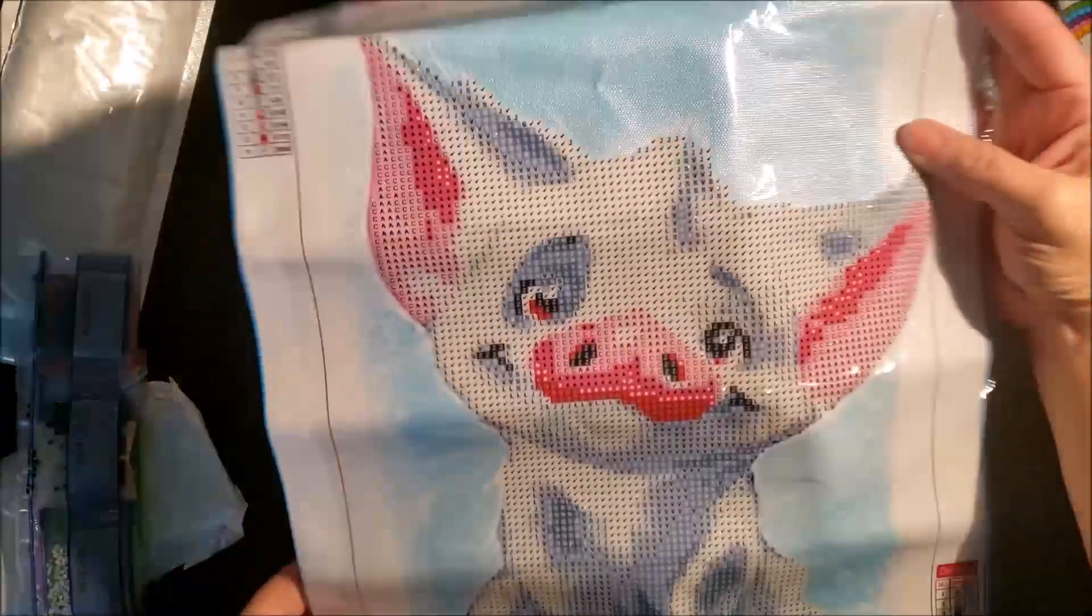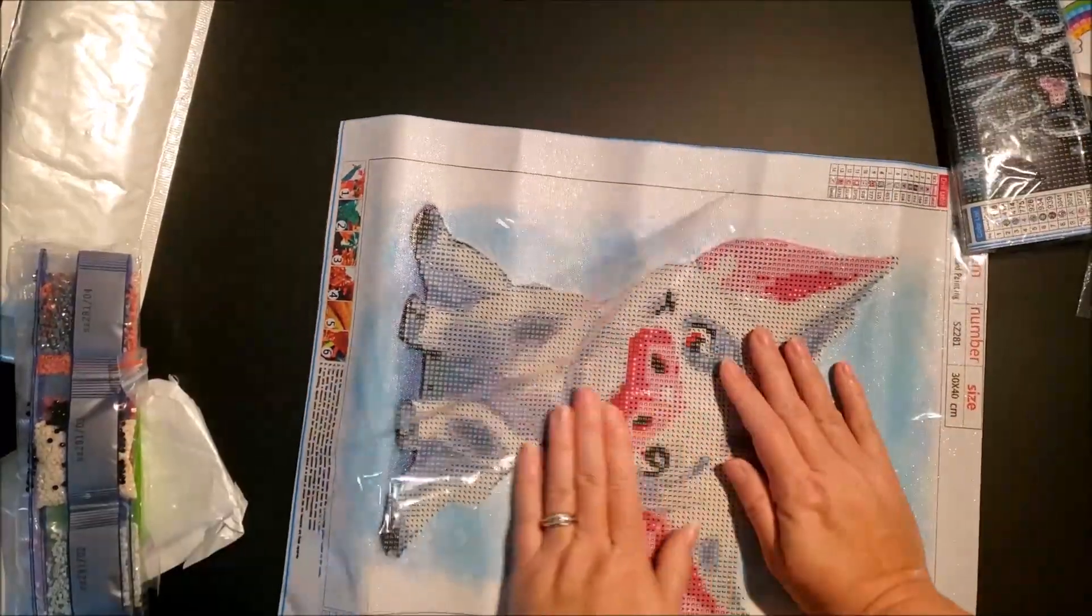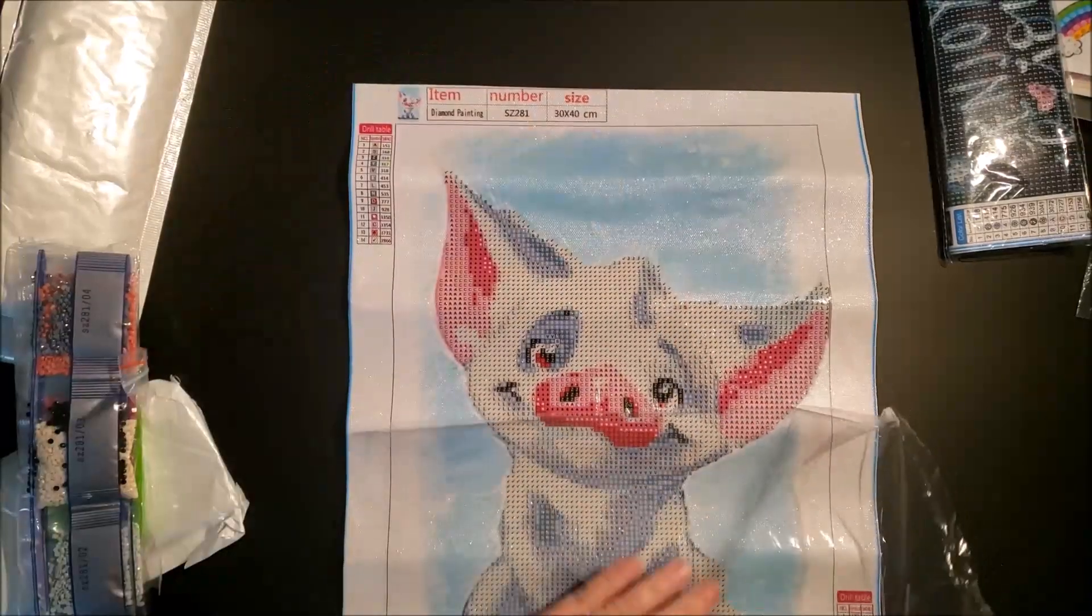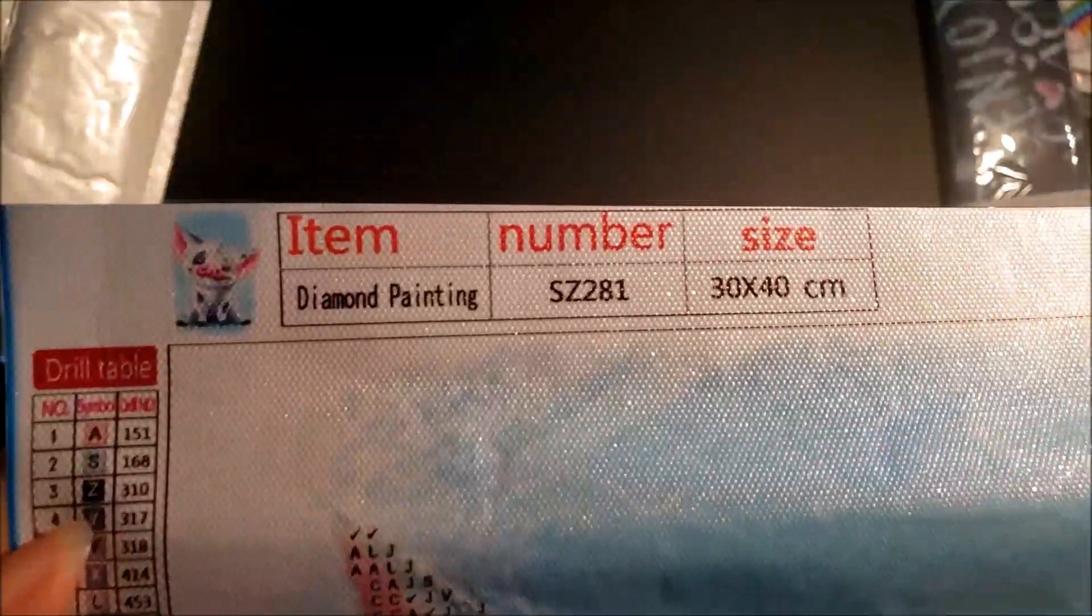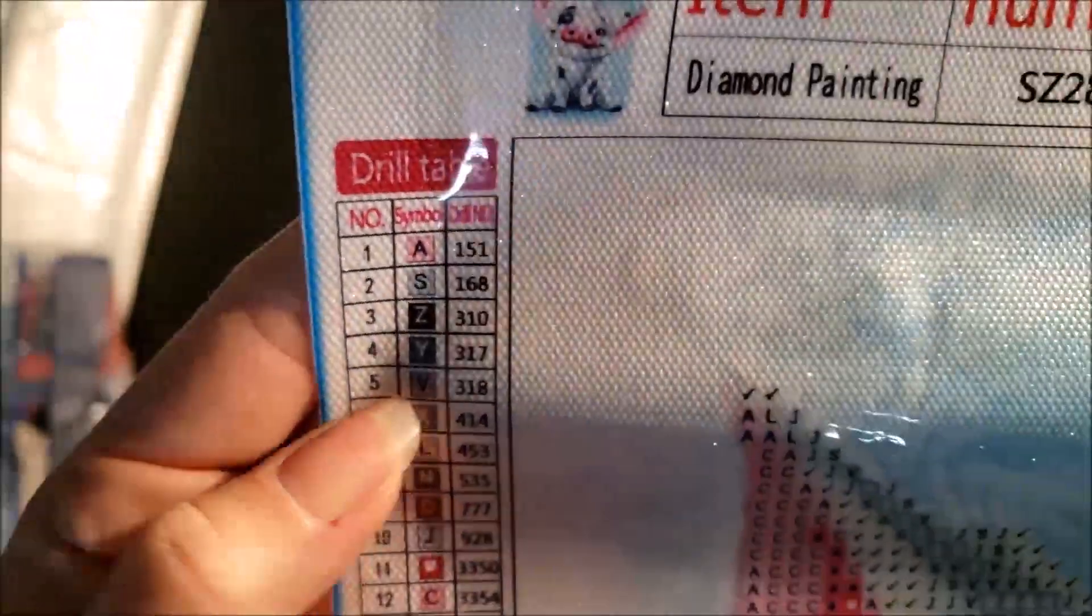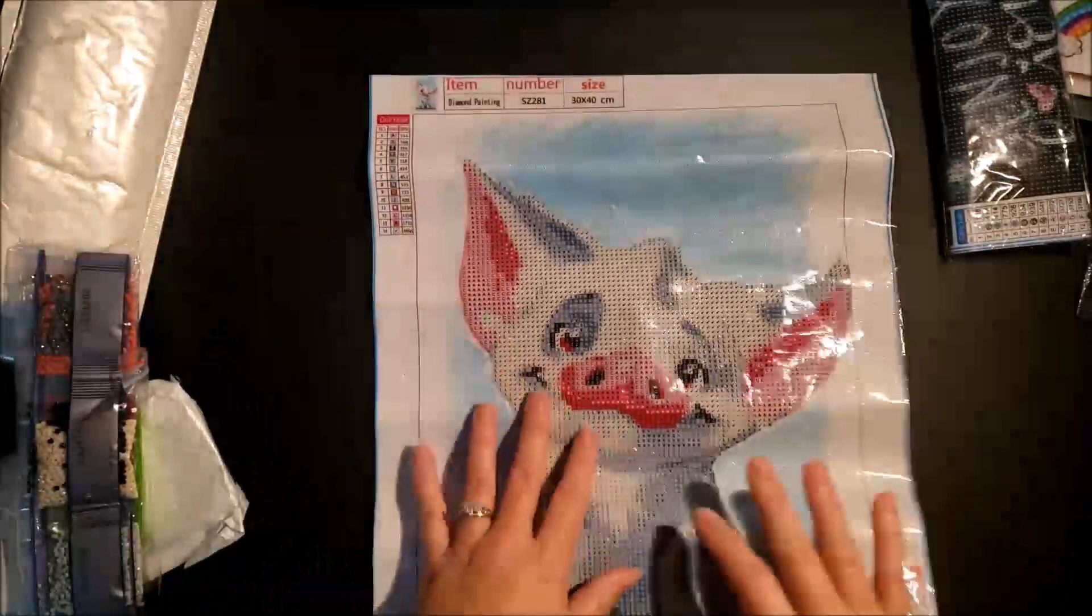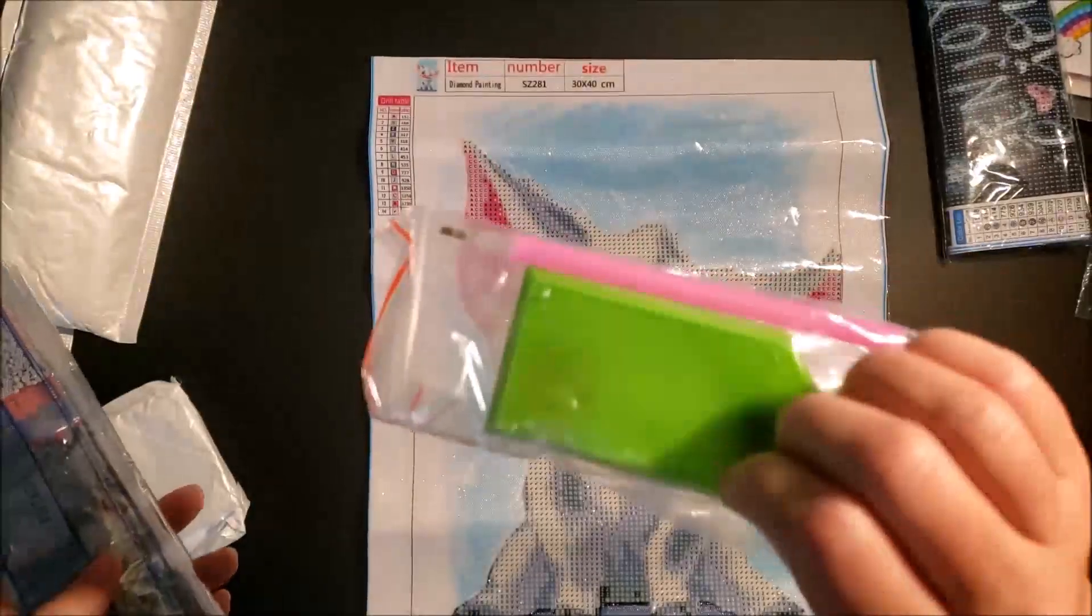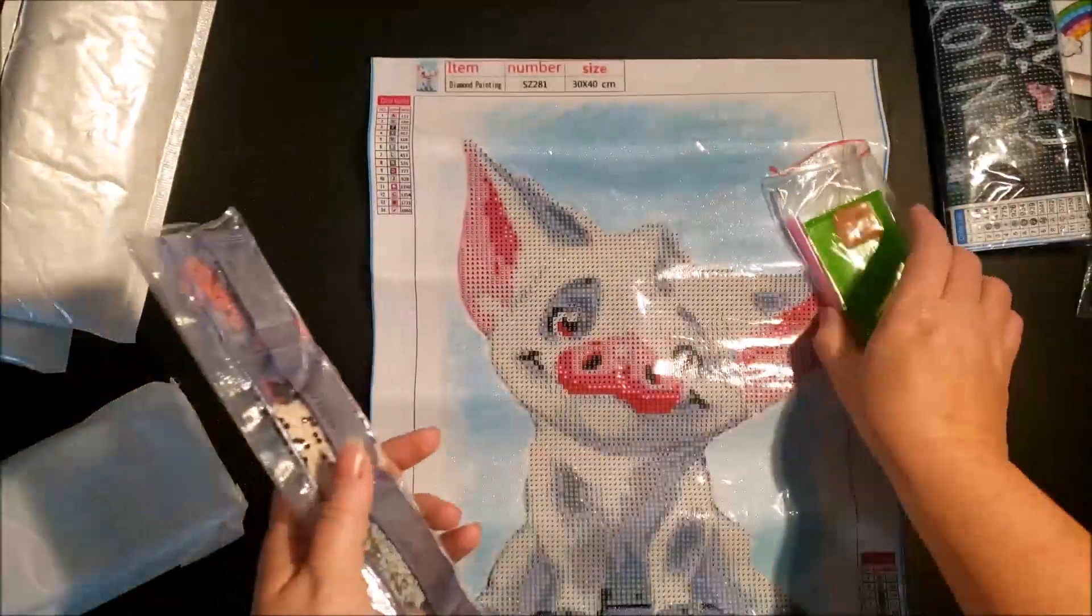This one is just a cute little pig. This one is a partial, I didn't notice that. I don't normally purchase partials but I didn't read that. He's still cute. And we have 14 colors, here is our picture, our legend is pretty small and it looks like it is letters and symbols. We have a standard kit and it is round. And here are our colors.